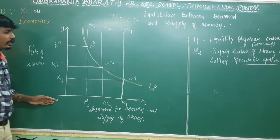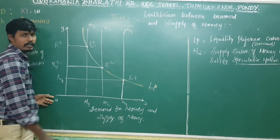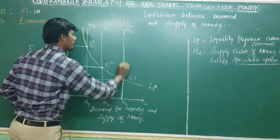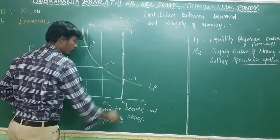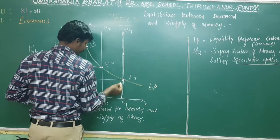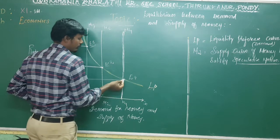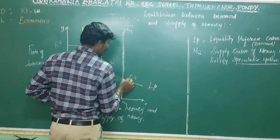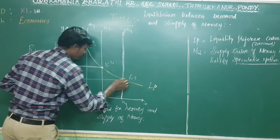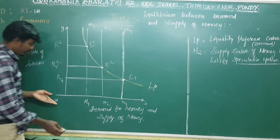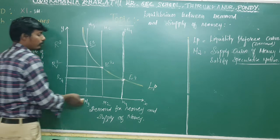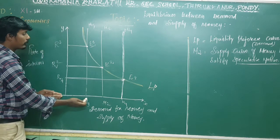M3 corresponds to E3. M3 gives R3 rate of interest, and M4 intersects the money supply curve. The equilibrium is set at E4, and R4 is the rate of interest. It is a very simple relationship — each money supply level corresponds to a specific rate of interest.